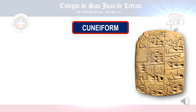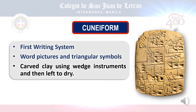First, let's talk about Cuneiform, which was the first writing system. They used wedge instruments to carve word pictures and triangle symbols on clay, then left it to dry. This was used for communication and for the purpose of record-keeping.